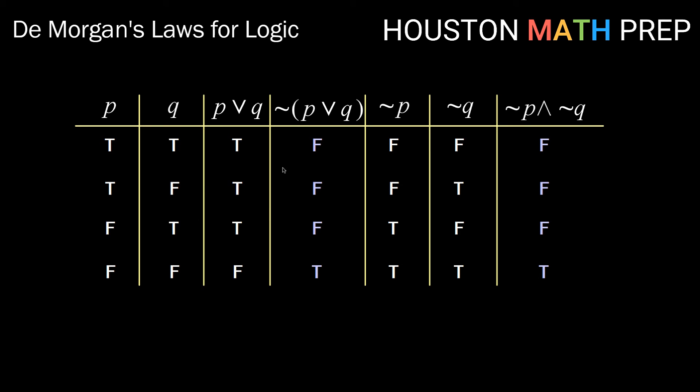Comparing the column for the negation of P or Q and not P and not Q, we see that they have exactly the same truth values and are therefore logically equivalent. So the negation of P or Q is not P and not Q.